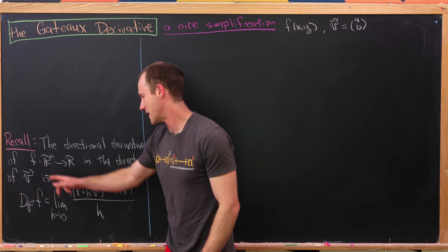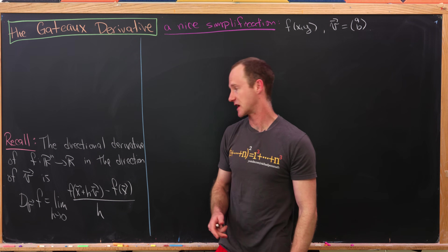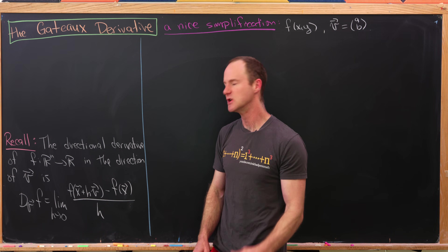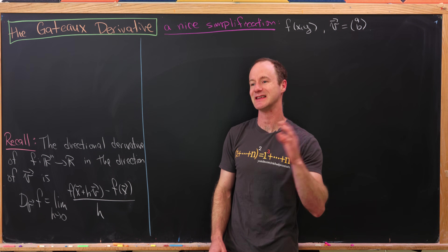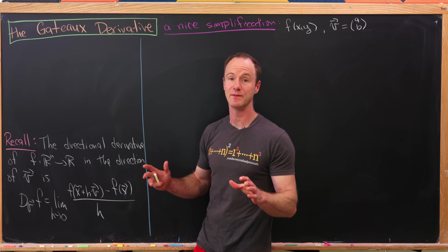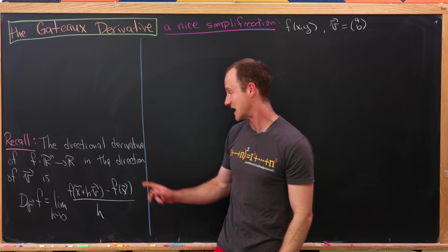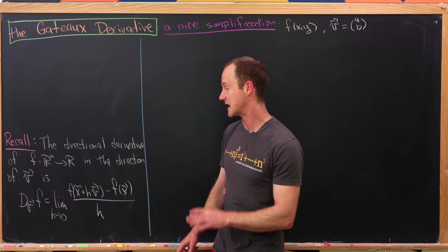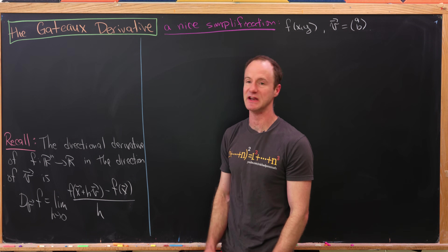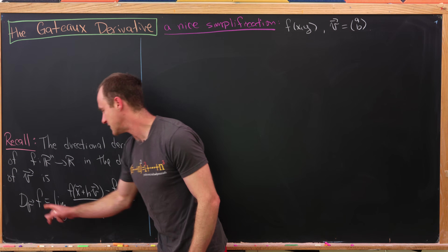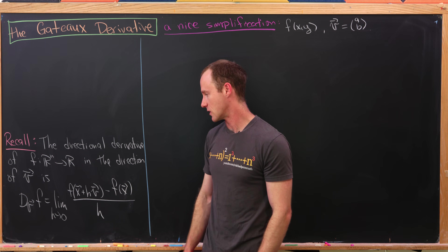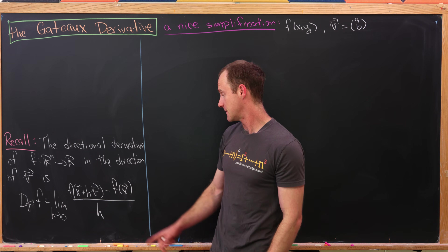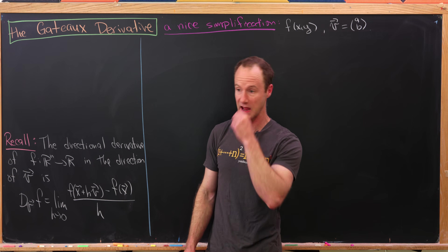The directional derivative of a function f, which has a domain of Rⁿ (n-dimensional vectors) and a codomain of the real numbers — so the inputs are n-dimensional vectors and the outputs are just numbers — the directional derivative in the direction of a vector v is defined as follows, if this limit exists: Dᵥf is the limit as h goes to zero of f(x + hv) − f(x), all over h.